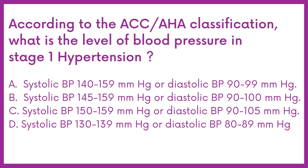According to the ACC AHA classification, what is the level of blood pressure in stage 1 hypertension? Option A: systolic BP 140-159 mmHg or diastolic BP 90-99 mmHg.